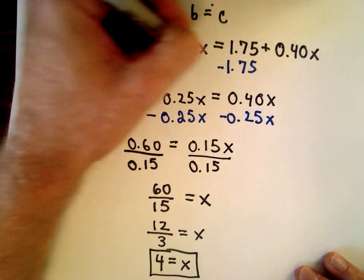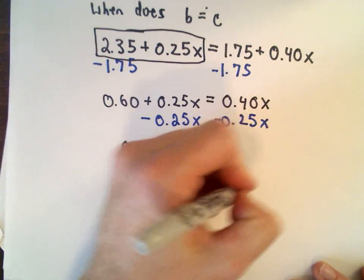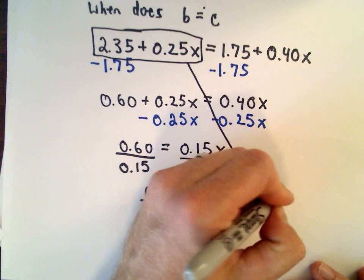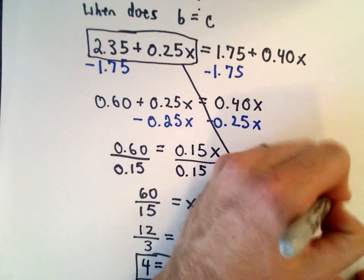I'm going to use this one, just because it looks like to me the arithmetic will be a little bit easier. So now if we use those two equations, we've got 2.35 plus 0.25 multiplied by four.